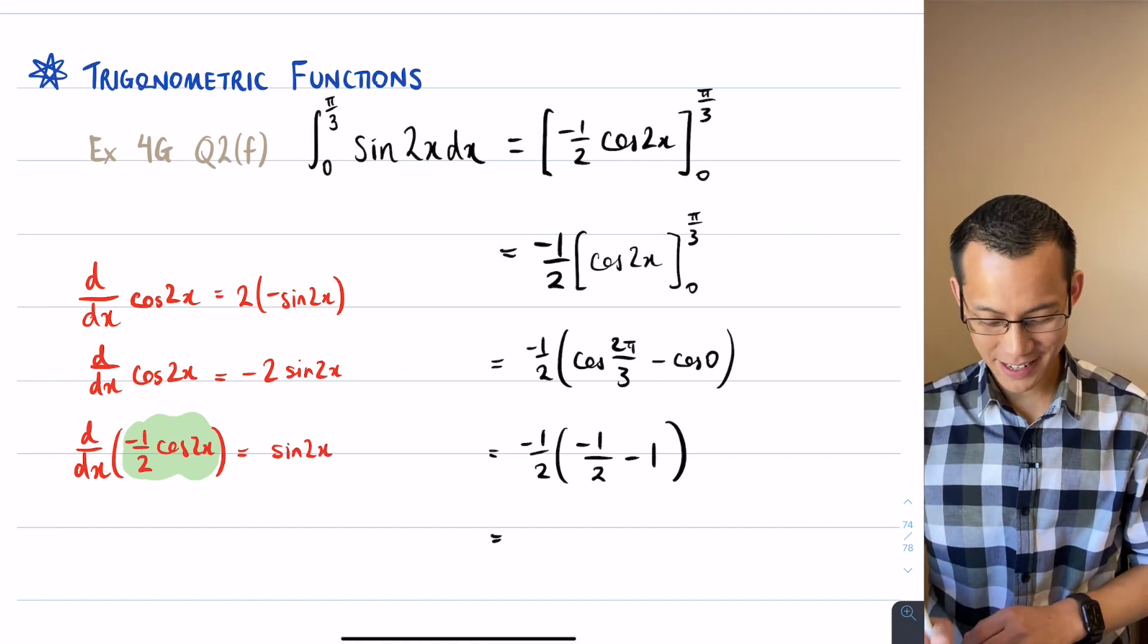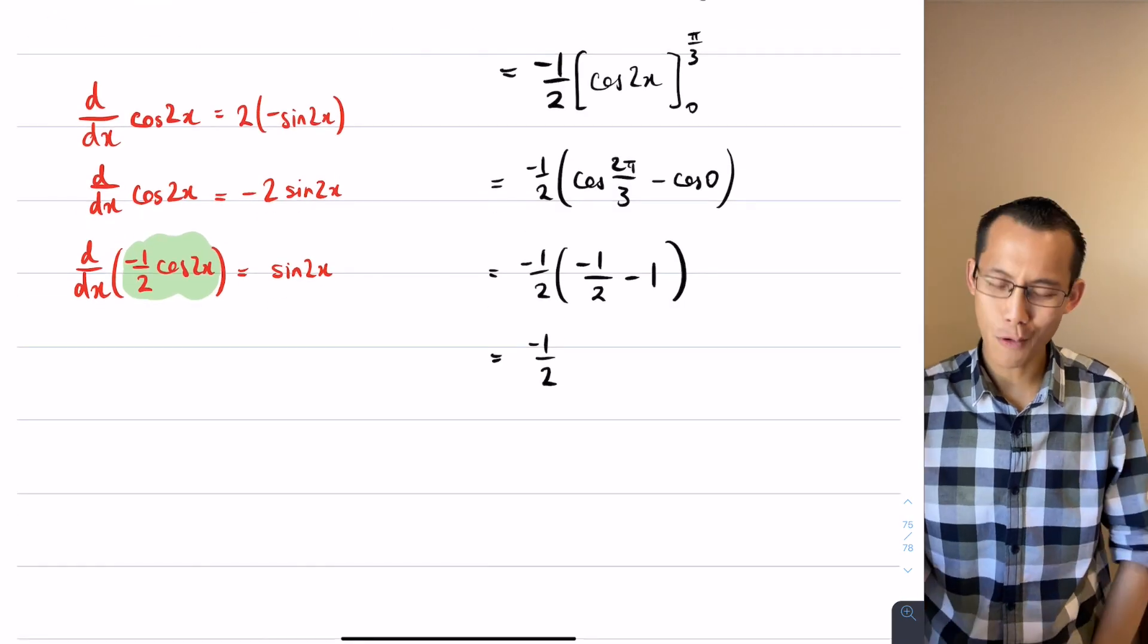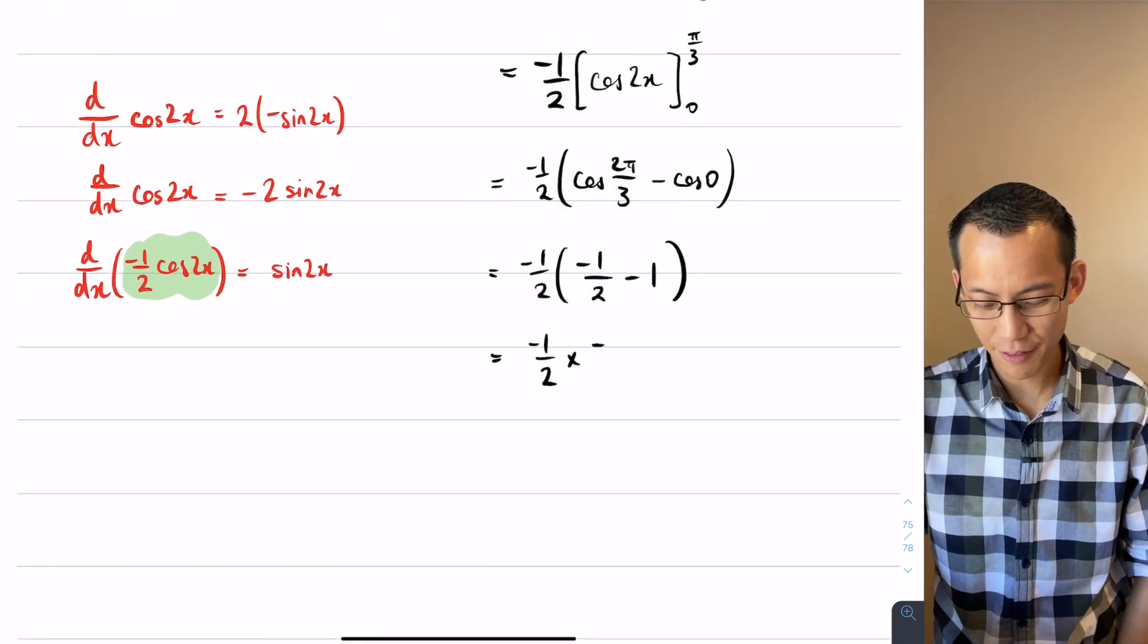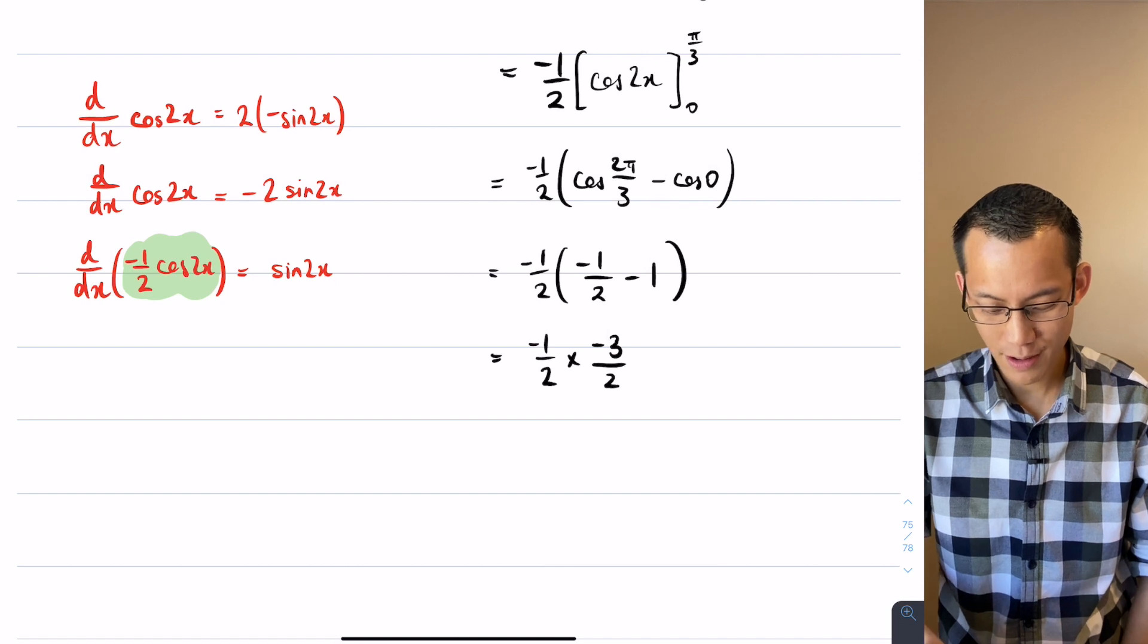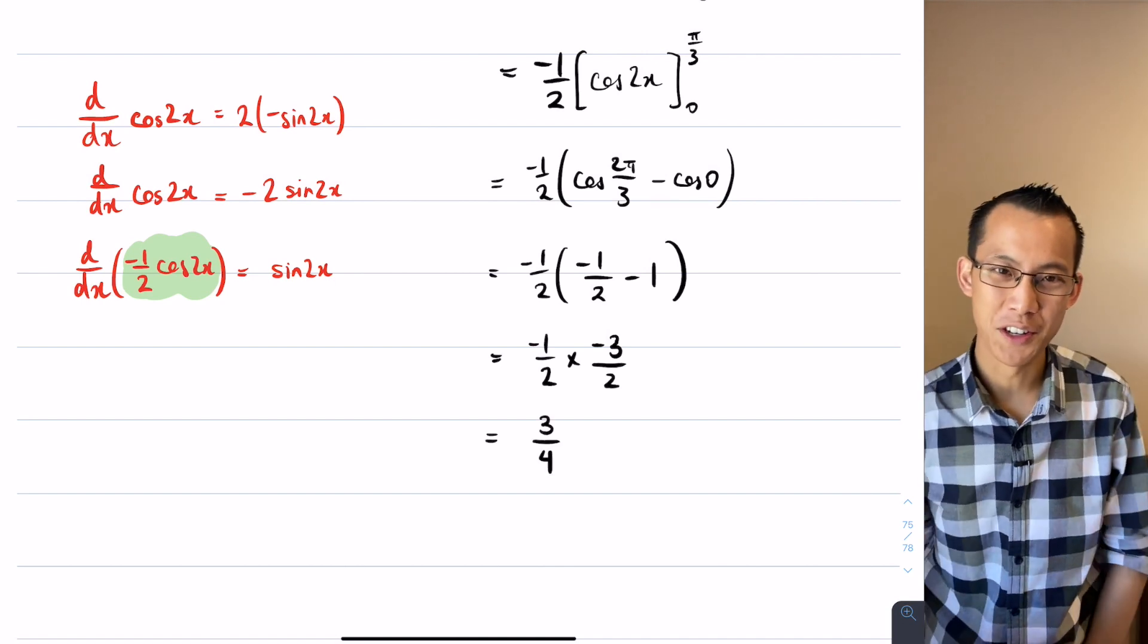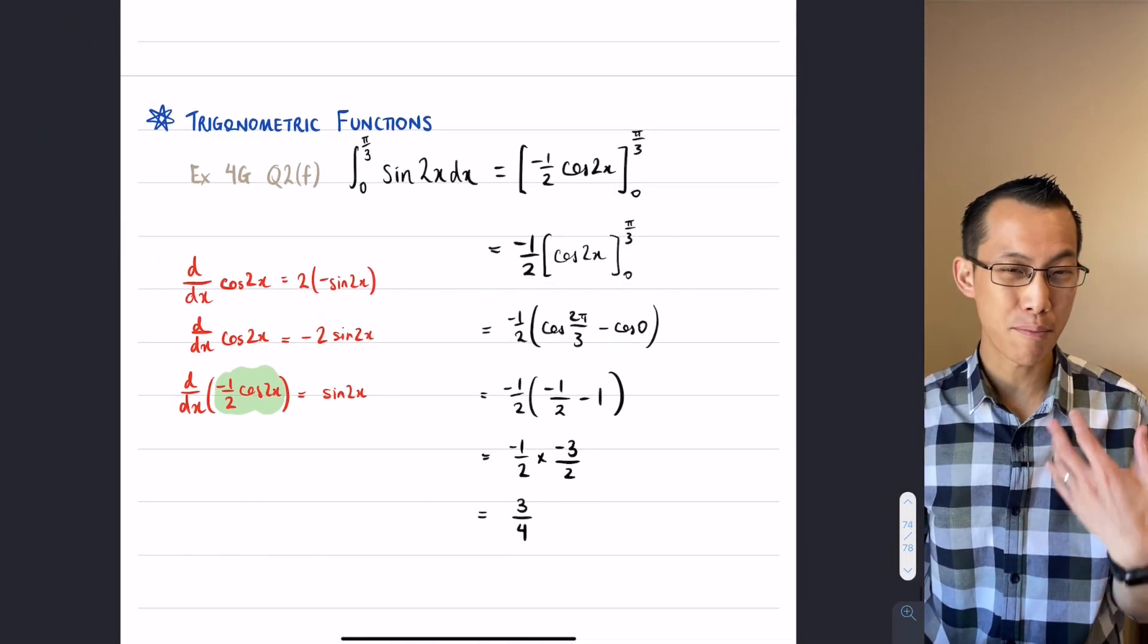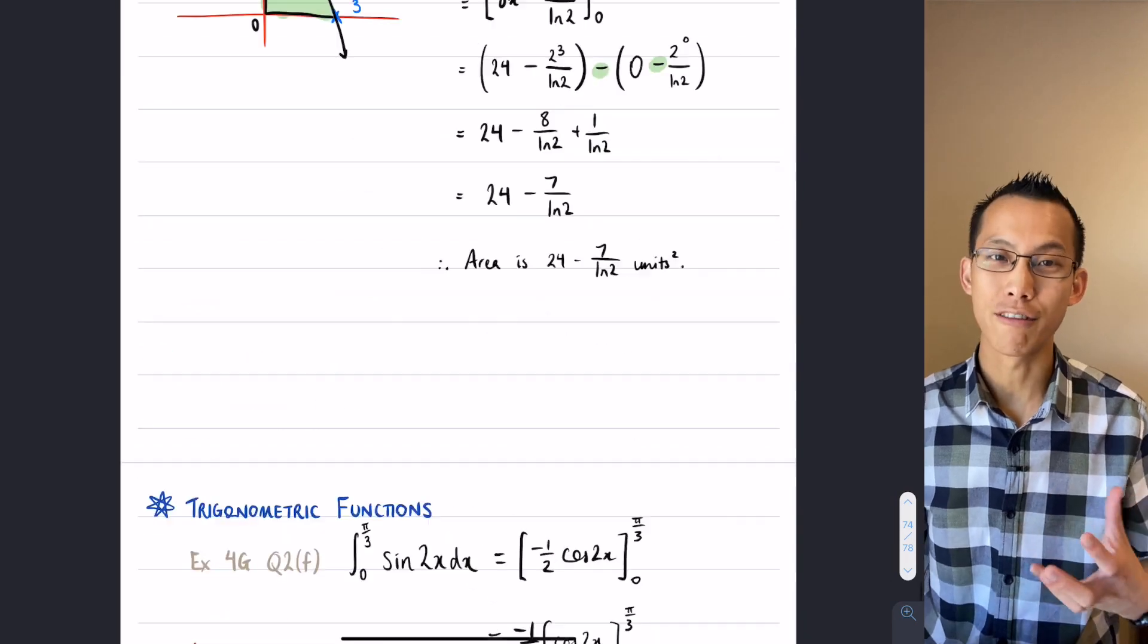Now I'm ready to do the arithmetic, so negative 1 over 2, negative 1 half take away 1, that's going to be negative 3 over 2, my negatives cancel, and I get 3 over 4. So that's what this looks like, and you can see how I had to call on some of my previous knowledge in order to do the integration part of this.